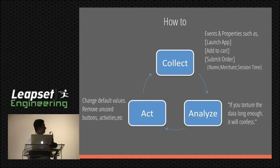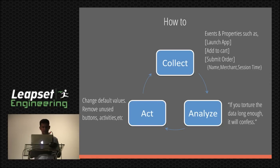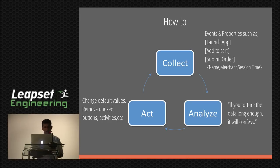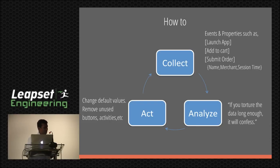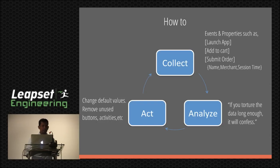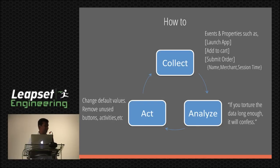When you have an analytical dashboard separate from your application, you can let different people analyze your data without exposing your database and APIs. You collect data — events and their properties. Events are things like launch app, add to cart, submit order. Some of the properties include name of the merchant, session time — how many minutes the user was navigating in a particular activity before submitting the order.